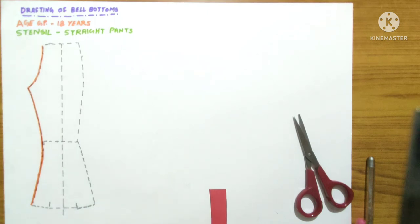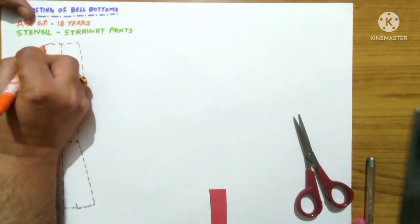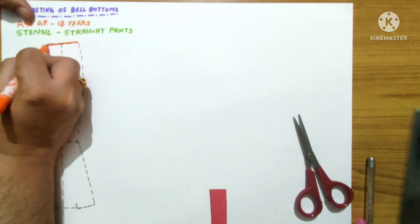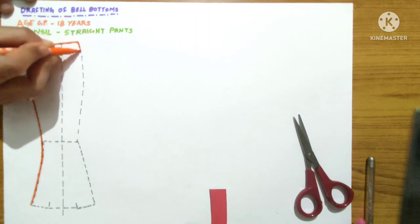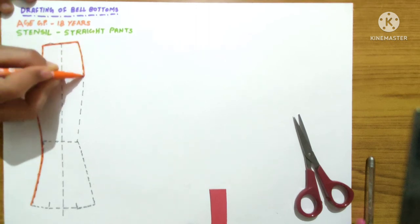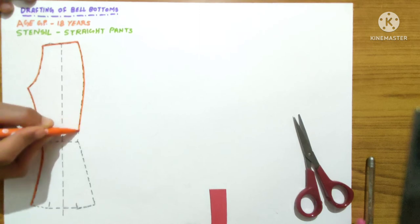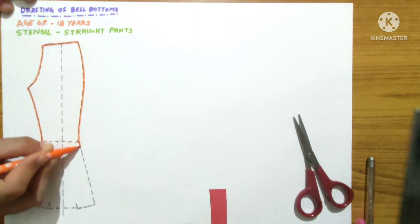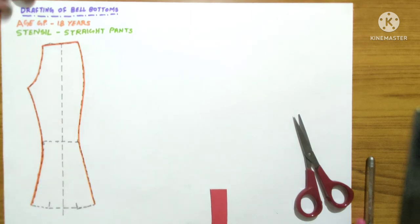And now we will mark the waistline, same as it is, we will mark the side seam. Same process you can do with the back portion also. So it will be complete, two cut you need of front, two cut you need of back. Belt will be as same as into the basic pattern.